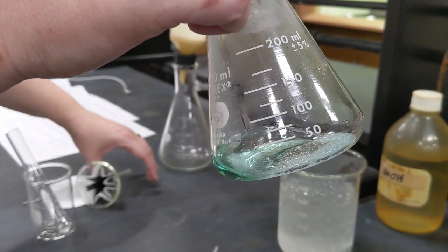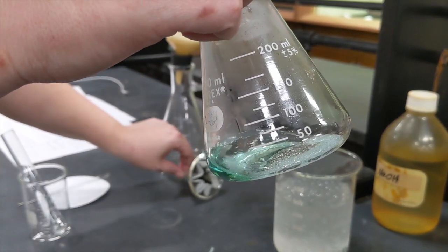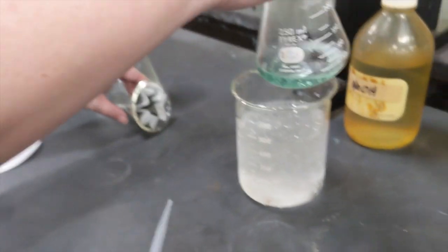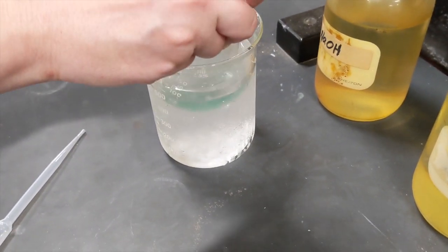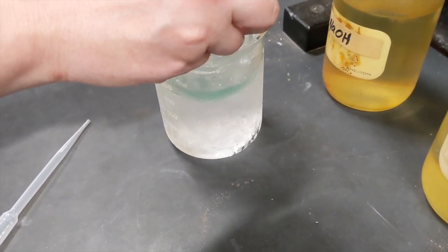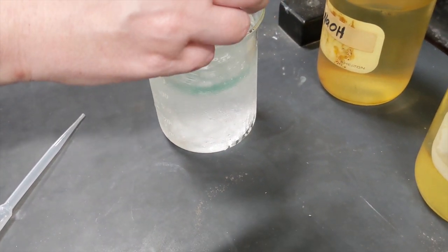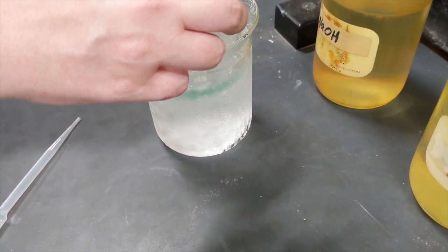To decrease the solubility of iron sulfate, we're going to decrease the temperature of the solution. So we're going to put our Erlenmeyer flask into our ice bath and let it sit here for a little while to get as many crystals out of there as we can.